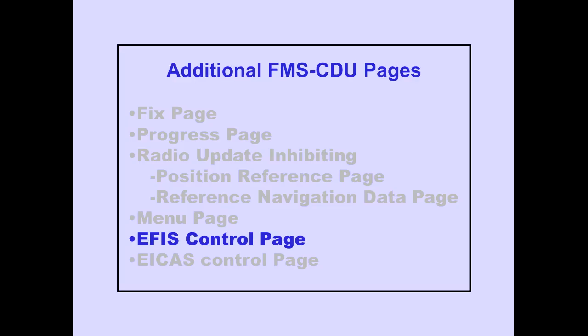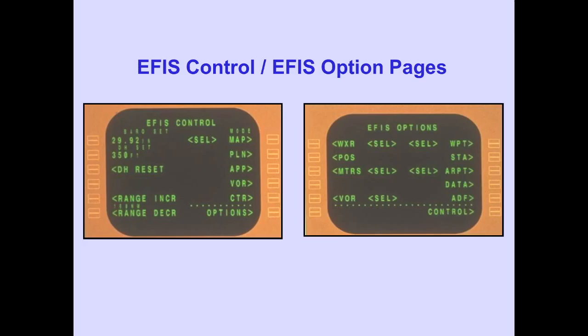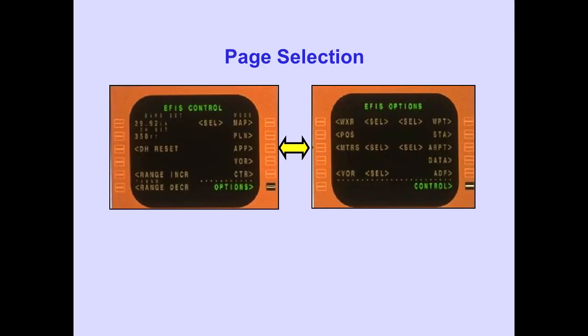Let's now discuss the EFIS Control Page. The EFIS Control Page is selected on the Menu Page. The Select Prompt is only displayed when the respective EFIS Control Panel has failed. The EFIS Control and EFIS Options Pages are used to select the modes and options of the PFD and ND. The Lower Right Line Select Key selects between the EFIS Control and Option Pages.